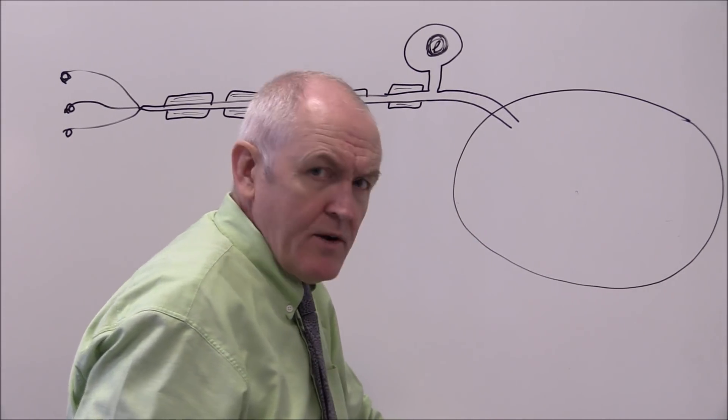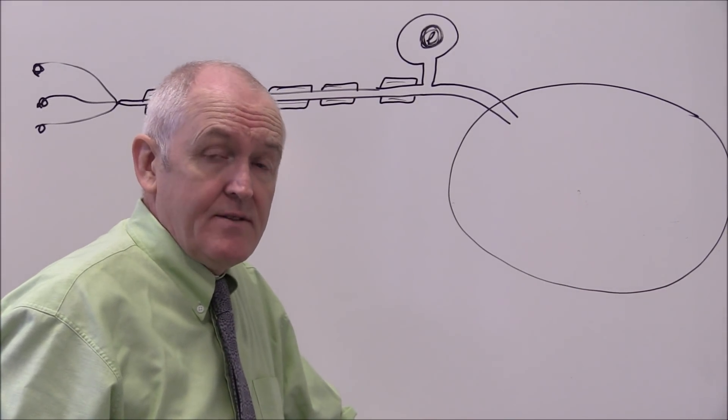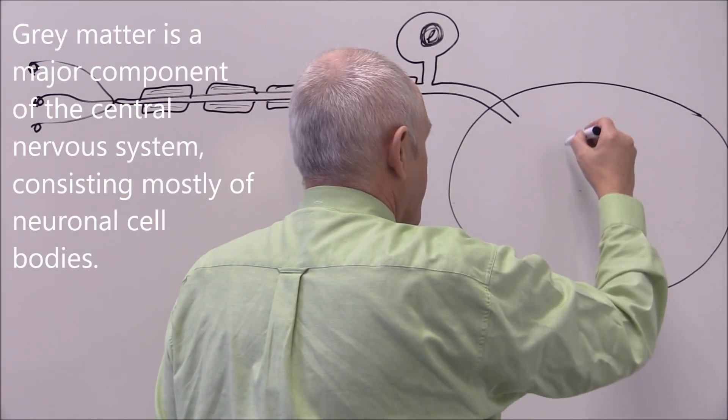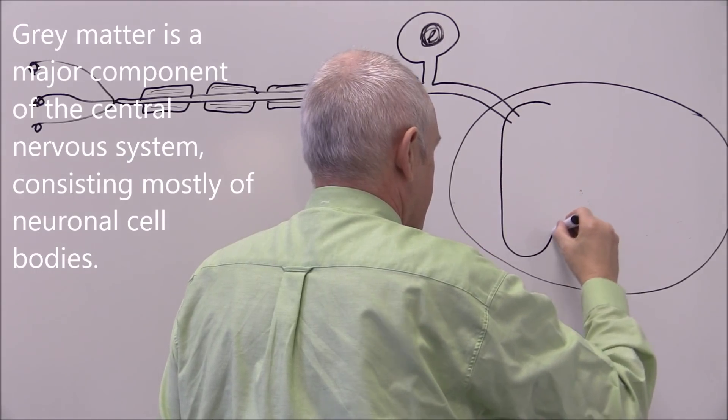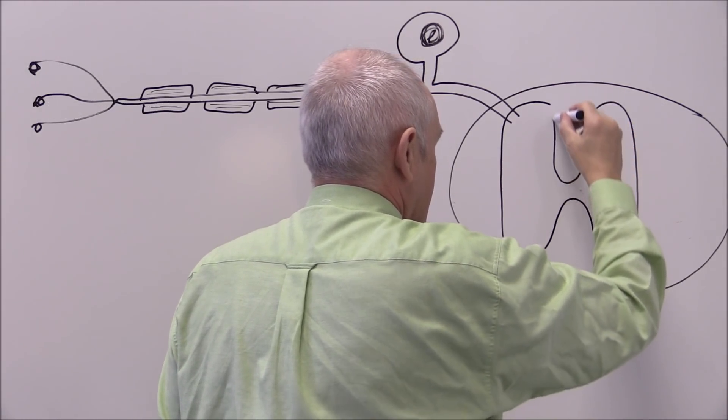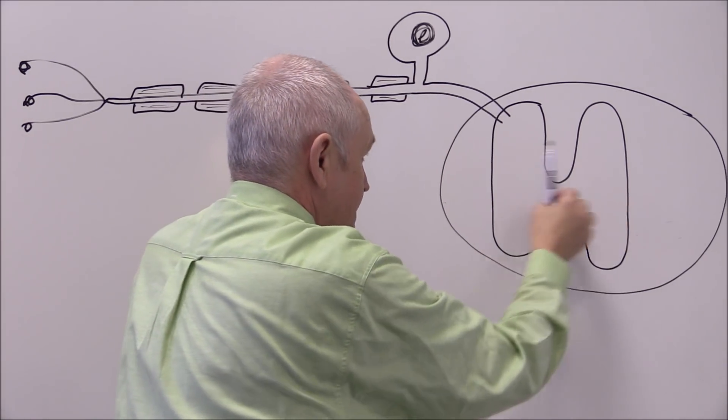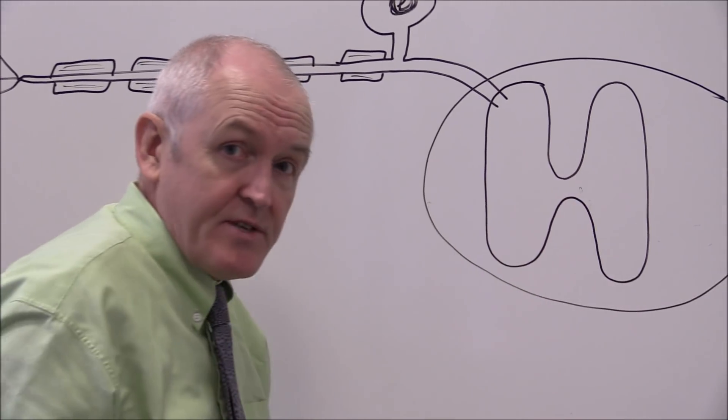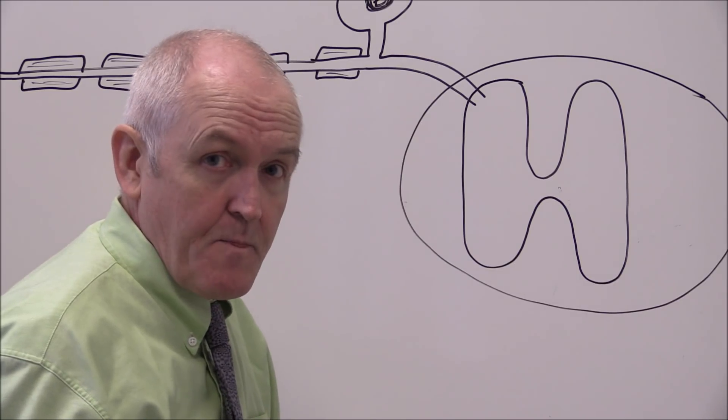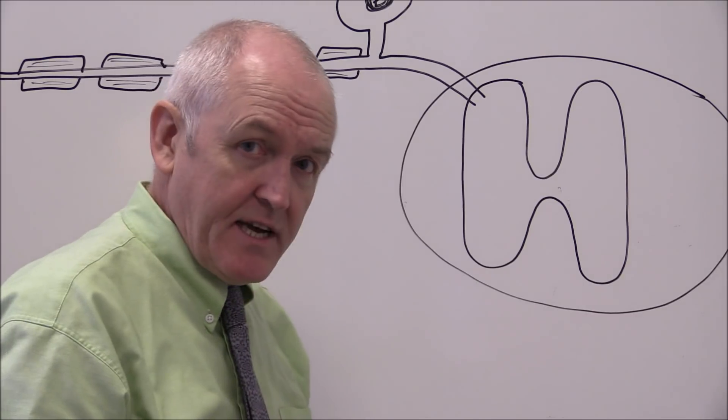Now in the spinal cord there's two sorts of matter: there's grey matter and there's white matter, and the grey matter forms an H shape. So the grey matter forms an H shape inside the spinal cord. All the matter inside the H is described as grey matter. When you slice a spinal cord you can see this as grey matter. The white matter is all around the outside of the H.